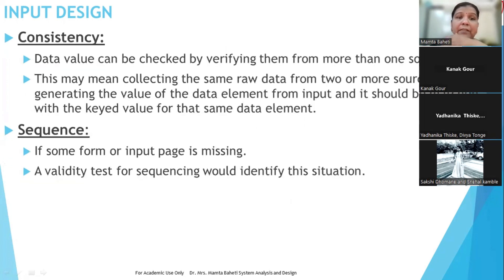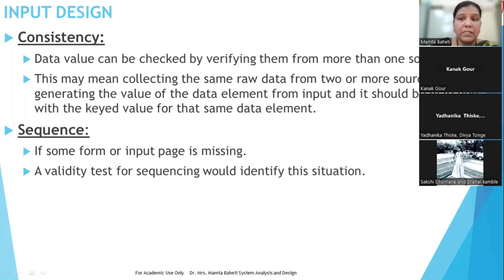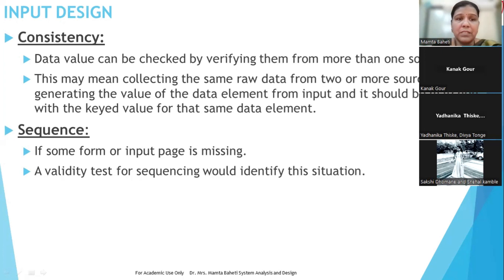Then there is consistency — data values can be checked by verifying them from one or more sources. For example, if you are typing from a laptop keyboard or a desktop, how is the data coming in? If you are inputting data from a mobile device, how is that data? Or if you are manually typing, how does that data come in? Some applications also allow speech-to-text conversion. So whenever data comes in as input, is it consistent from the source it was taken from the first time? Other sources should also deliver data exactly as expected.